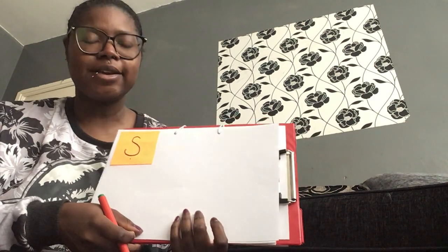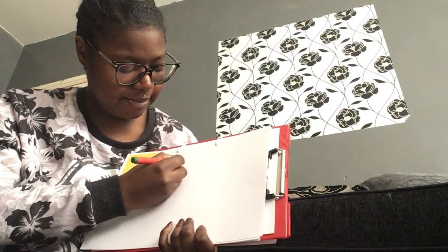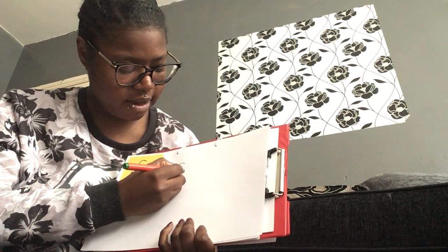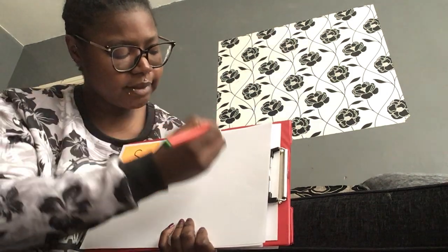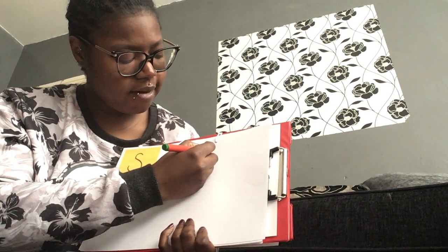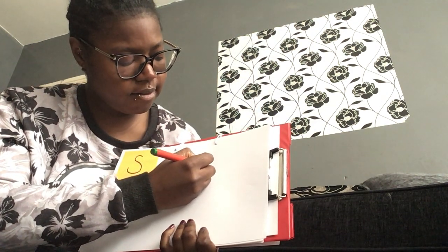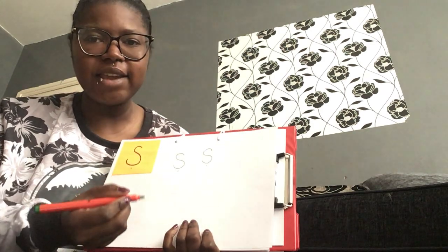Shall we practice writing our s sound? I'm going to start at the top here. I'm going to go around, down like this. Put my sound button on the bottom. Again. Around. Oh, it's a very curly line.